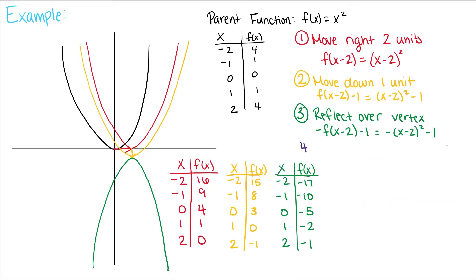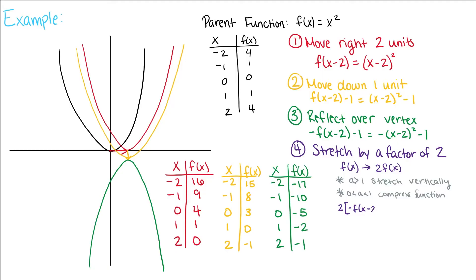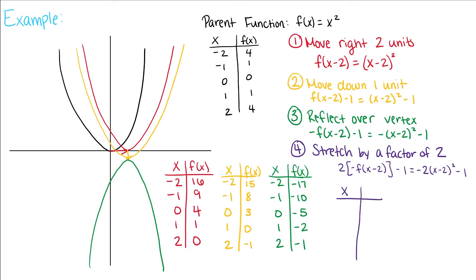Last, let's stretch this function by a factor of 2. We multiply our entire function by 2, so our function becomes f(x) = -2(x - 2)² - 1. When we stretch that, we have our new table of values.